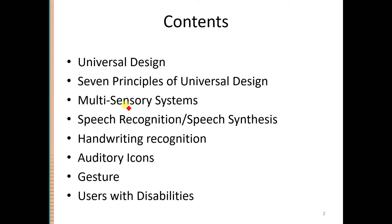Then we are going to discuss about multi-sensory systems. Humans have five senses, and we will discuss what senses can be used in the design. Some senses are used very frequently. For example, there are systems which use speech recognition, systems which generate speech, and speech synthesis systems. We'll discuss their properties, advantages and disadvantages. We'll also discuss handwriting recognition, auditory icons, and gestures.